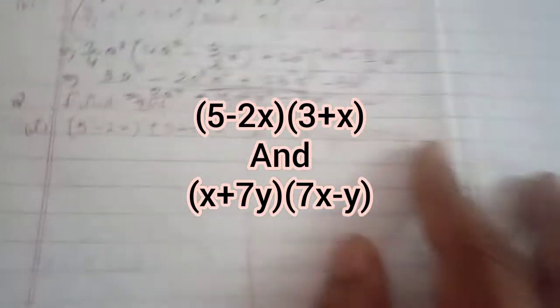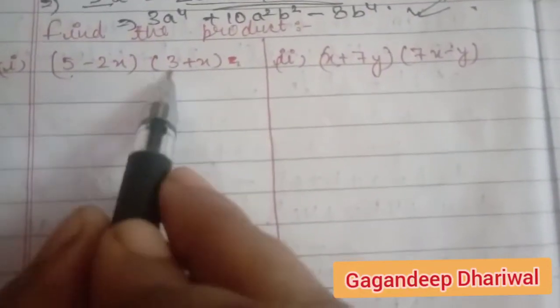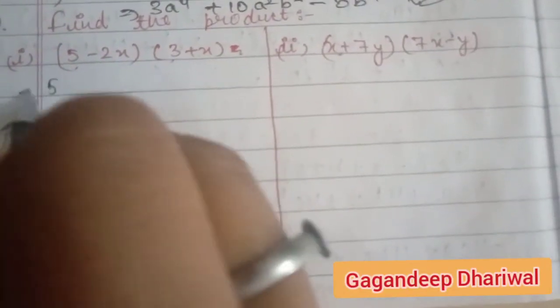Students, in this question we have to multiply two expressions. The first is 5 minus 2x and the second one is 3 plus x. So firstly, multiply 5 with 3 plus x, then minus 2x with 3 plus x.